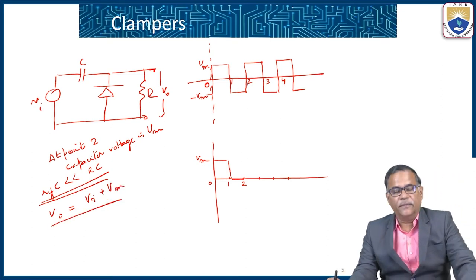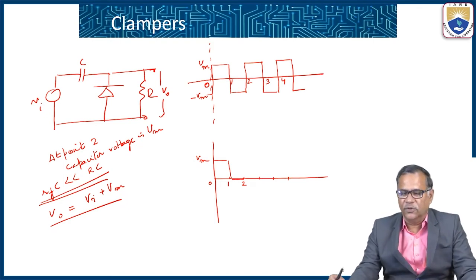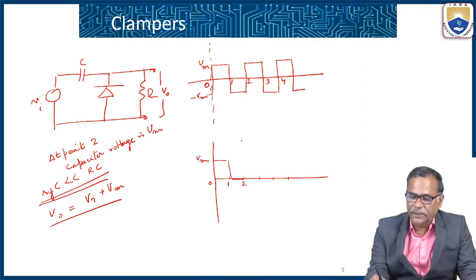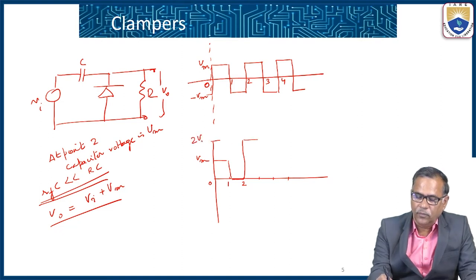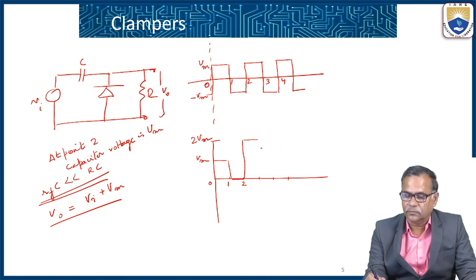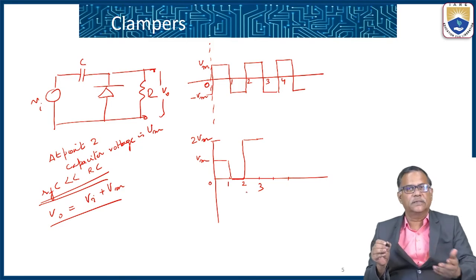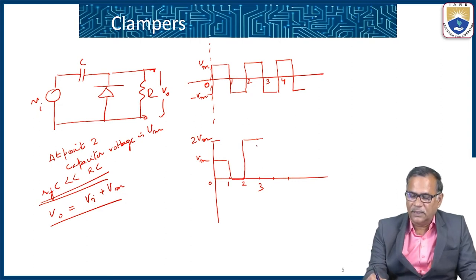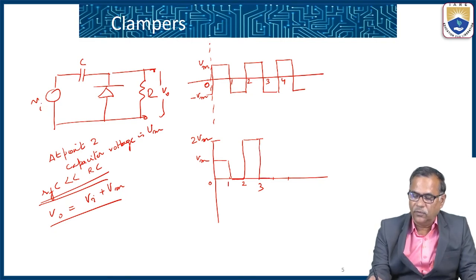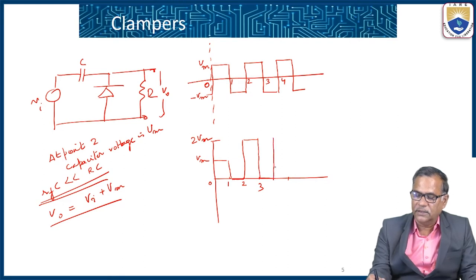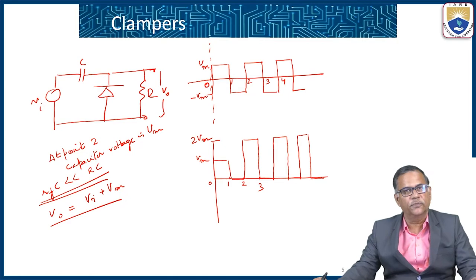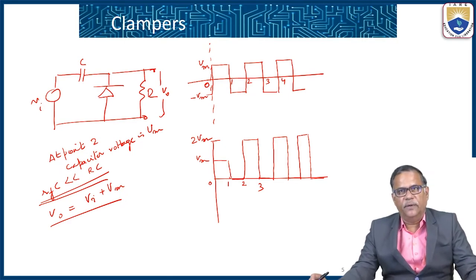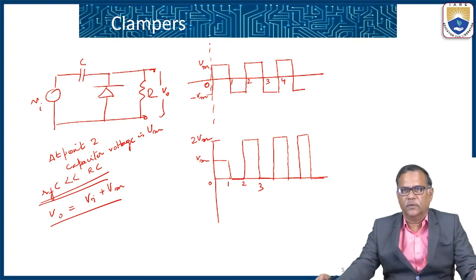During points 2 to 3, the voltage becomes positive and the capacitor voltage is already Vm, so we get a voltage equal to 2Vm. Between points 3 and 4, when the voltage becomes negative, the diode is forward biased and the output voltage is 0. Then again the voltage is 2Vm. Under steady state conditions, the input square waveform is clamped to a waveform with an average value of Vm — this is the steady state response.